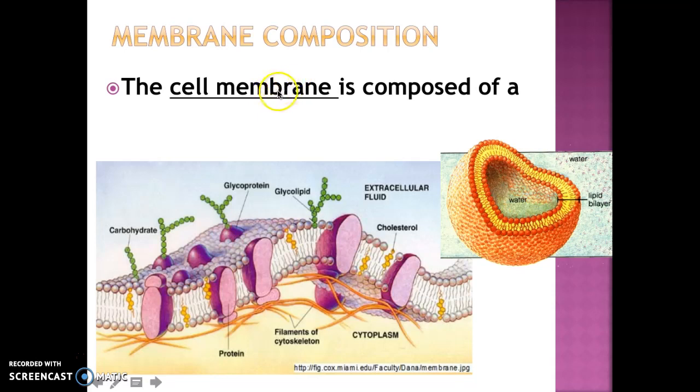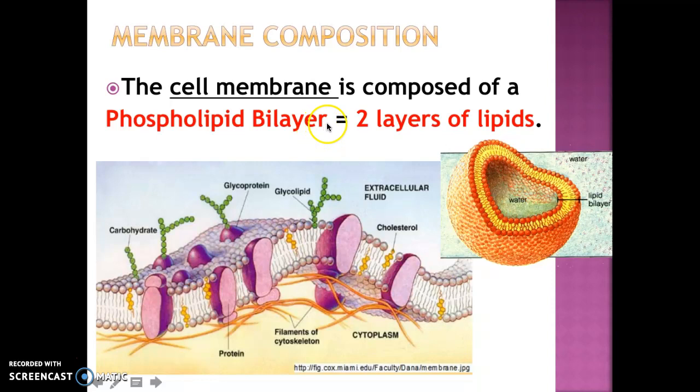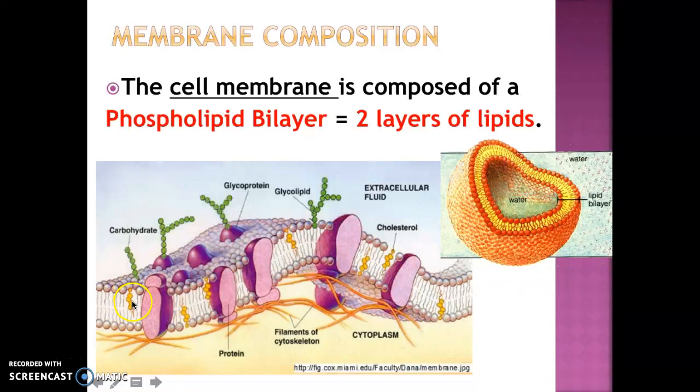What is the cell membrane made of? The cell membrane is composed of what we call a phospholipid bilayer. 'Bi' means two, so there are two layers of phospholipids — one on the outside of the cell and another on the inside, facing each other. That is what we call the phospholipid bilayer: two layers of lipids.